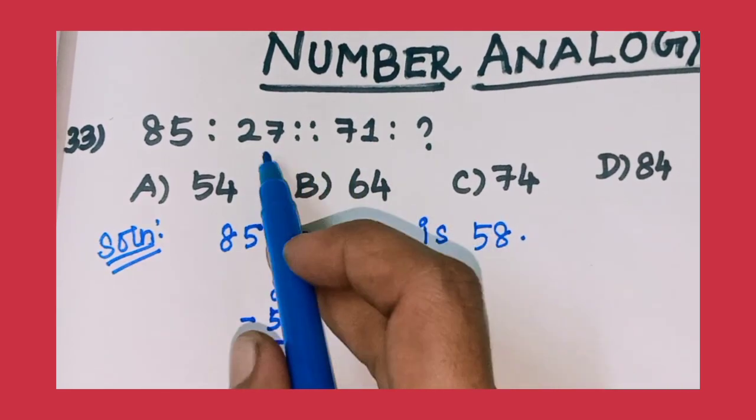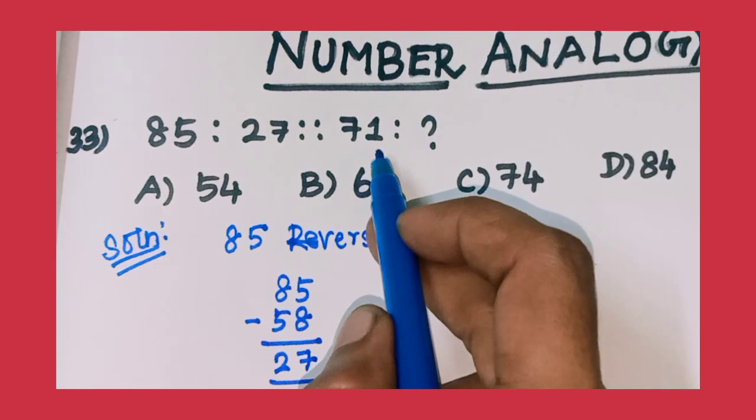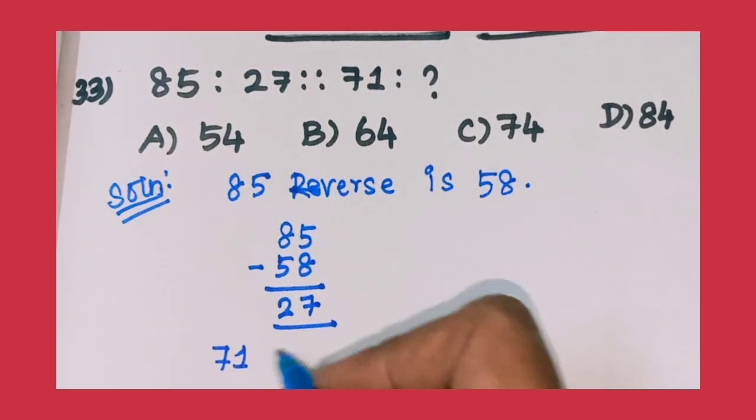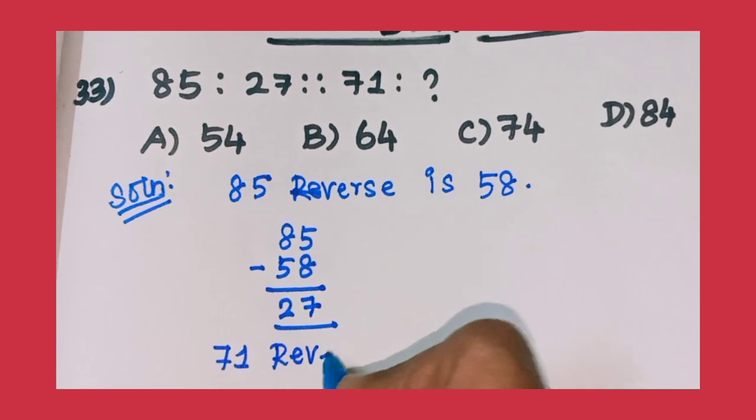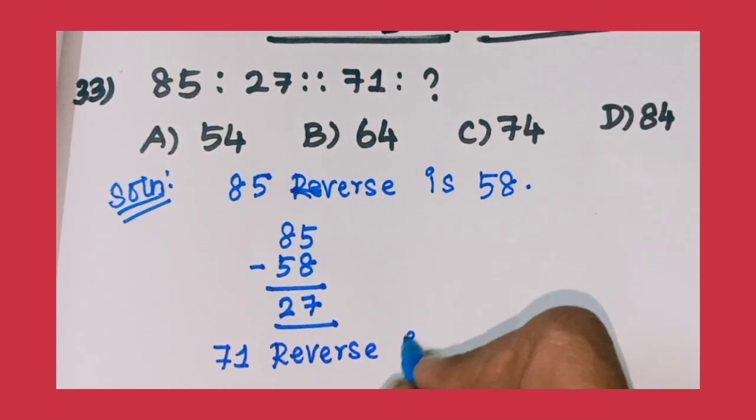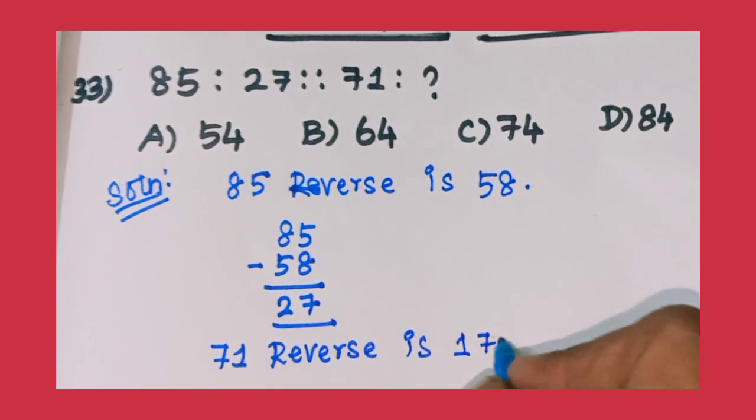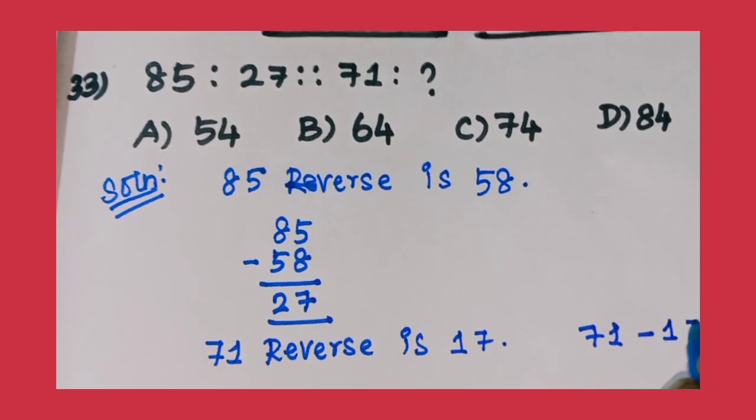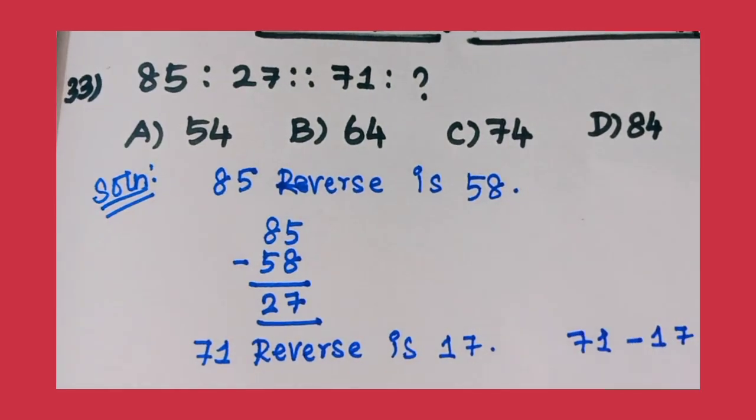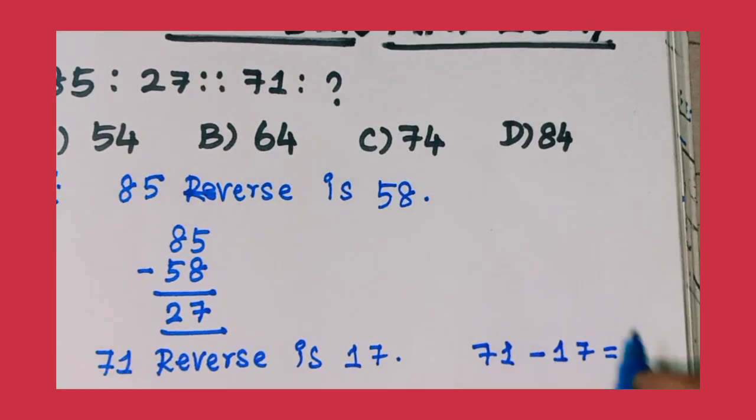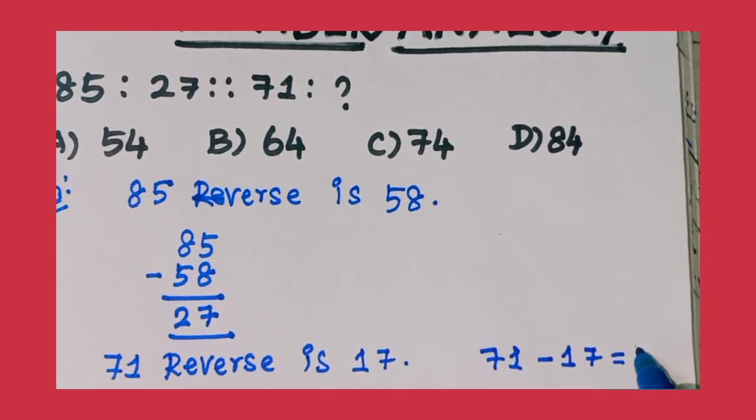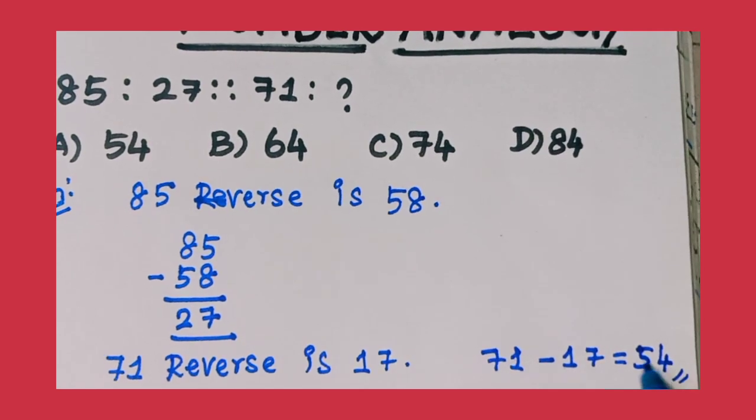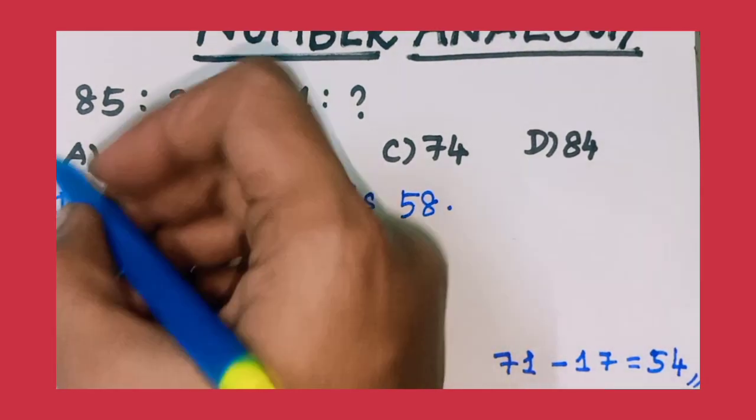The answer is 27. 27 is the second term. And third term is 71, reverse is 17. 71 minus 17 equals 54. The answer is Option A 54.